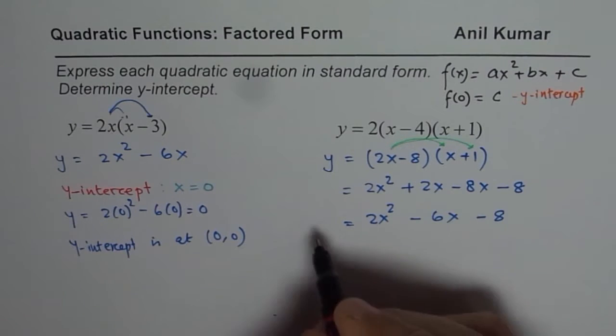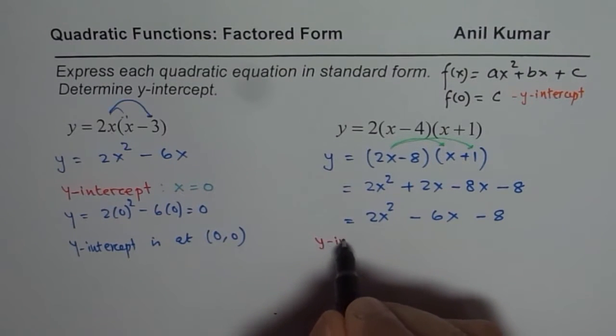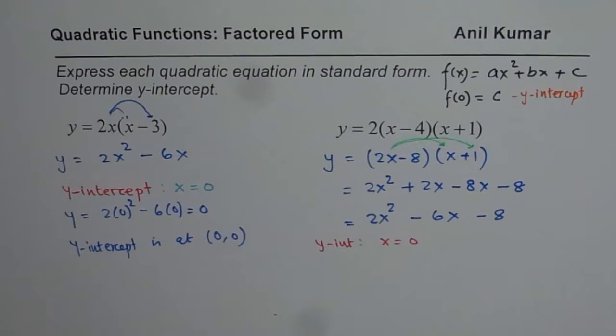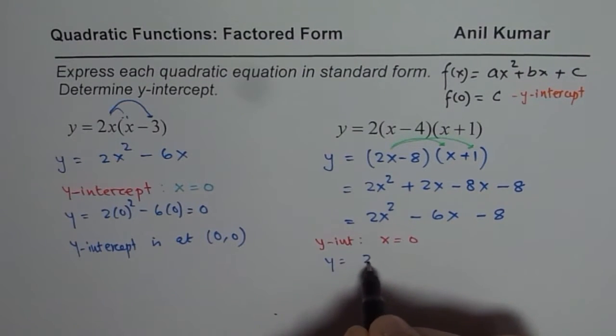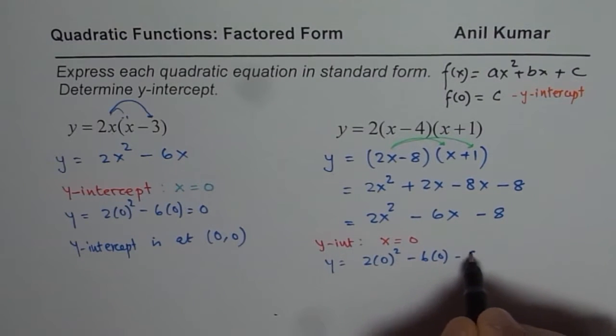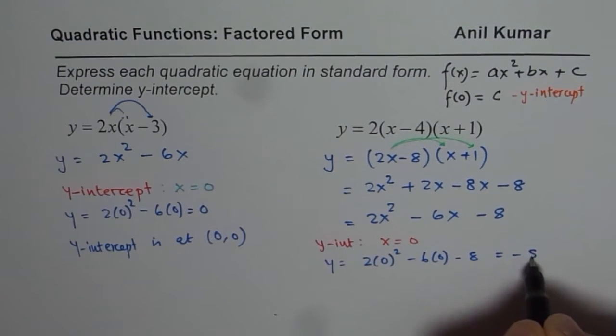Now once we have got the standard form, let us find y-intercept. That is x = 0. So we will equate 0 for x. So we get y = 2(0)² - 6(0) - 8 and that is minus 8.